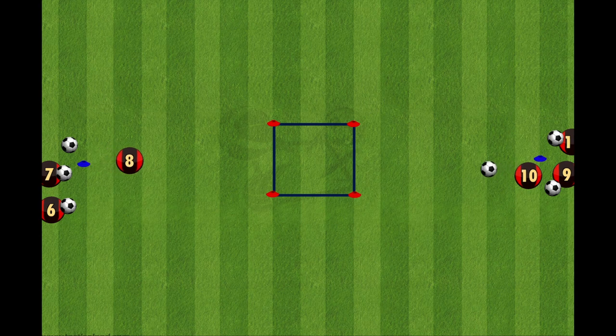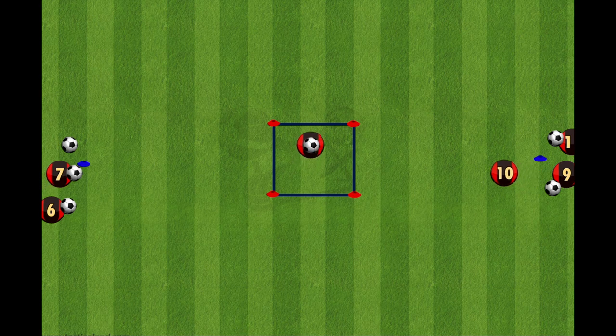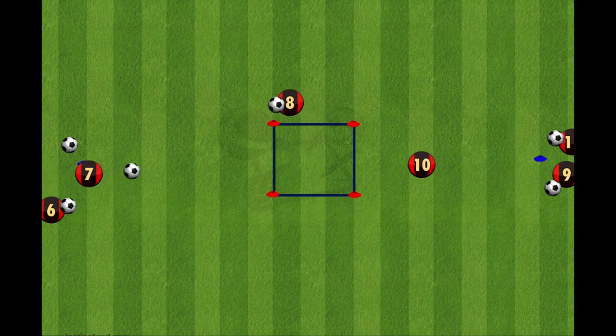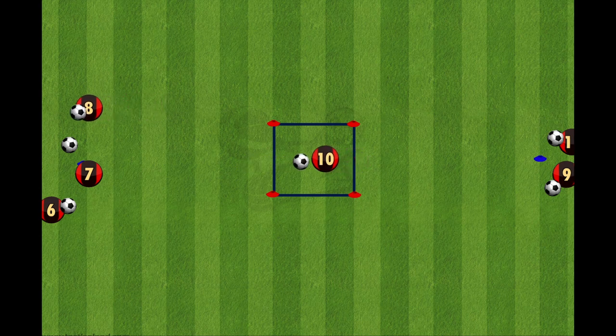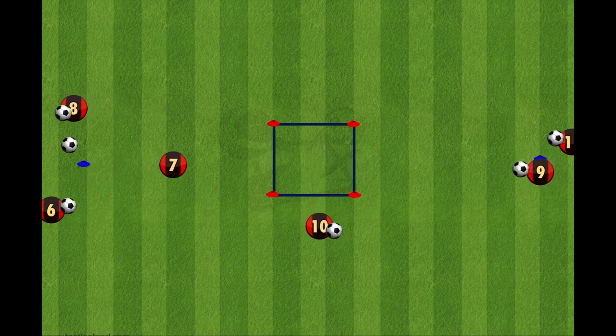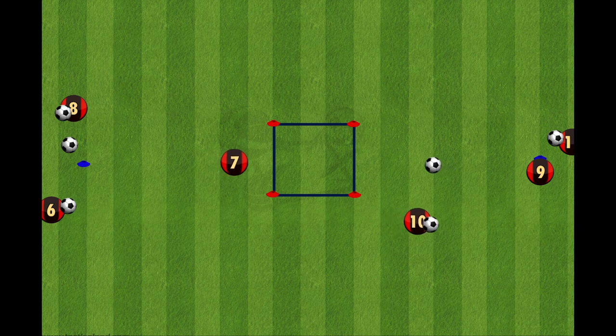A player will run into the square and as they approach the square, the person on the other side will play a ball in. That player takes a good first touch out of the side of the square and then continues back to their line. The person who played the ball into the square then follows that pass and receives it from the other side. This keeps the drill flowing.